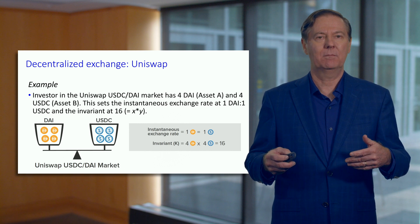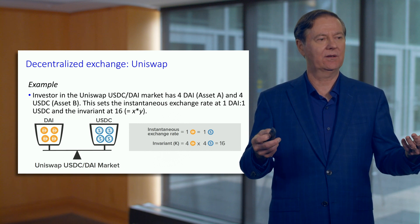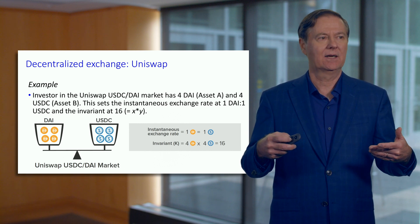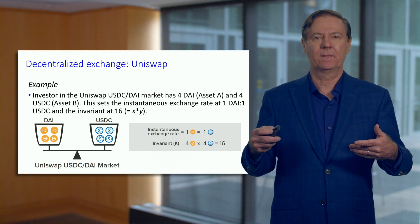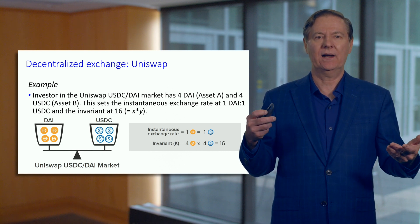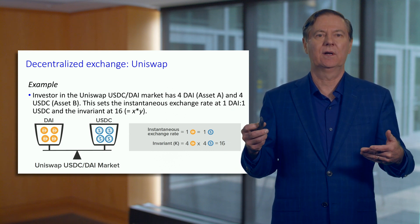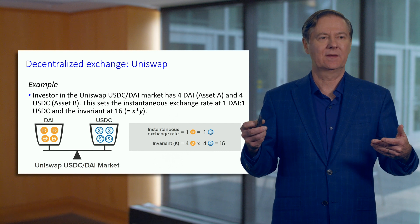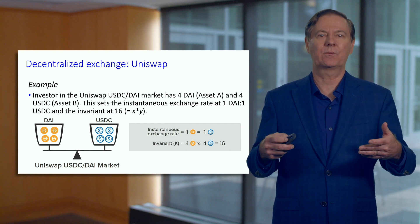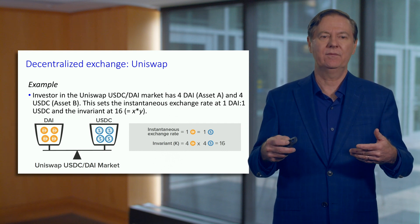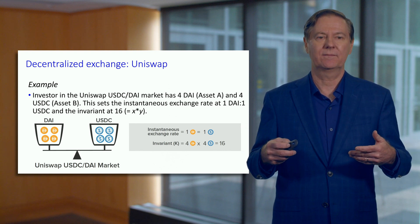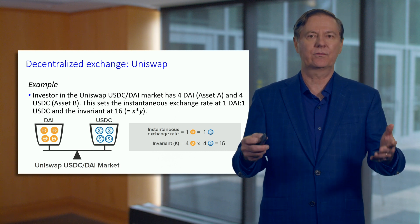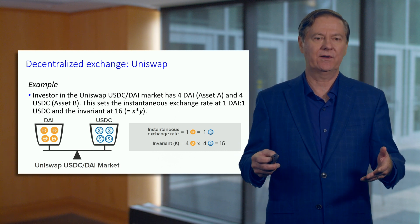Because we have this constant product K equals X times Y, we also have the exchange rates that are set as basically just the ratio of X and Y. Let's go through a number of examples.